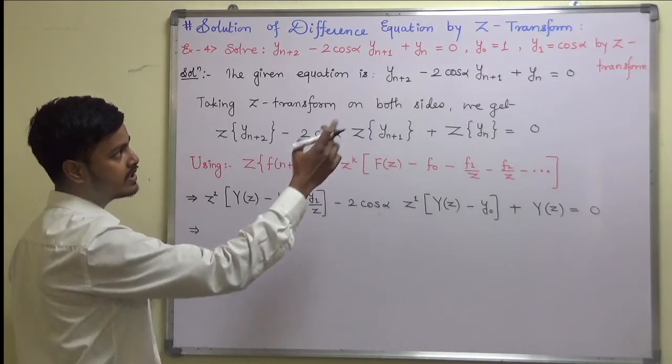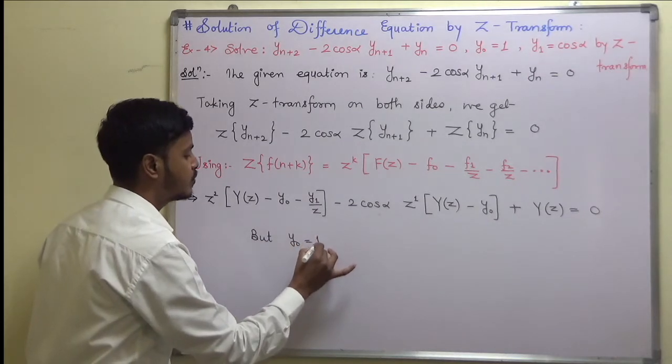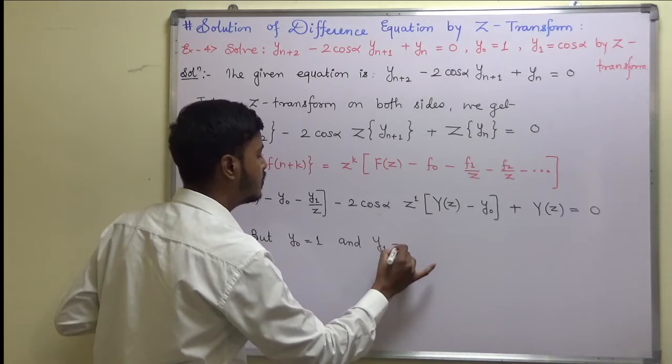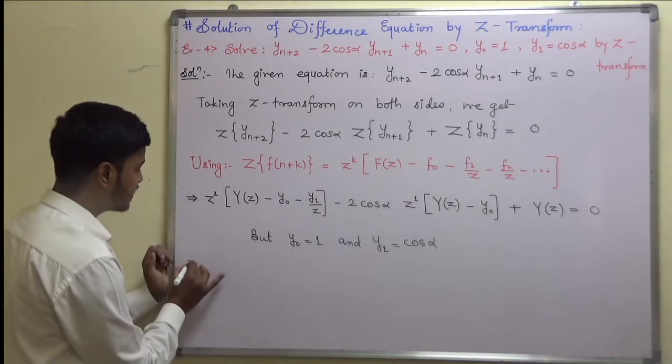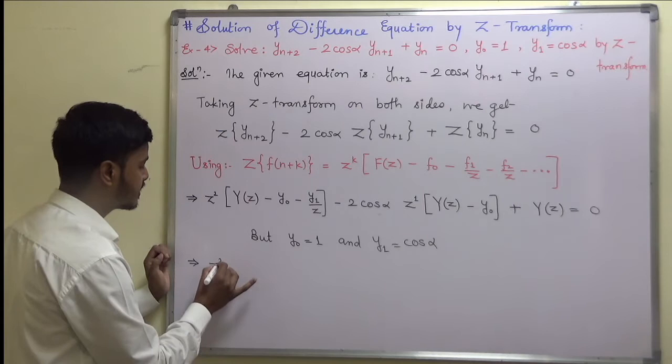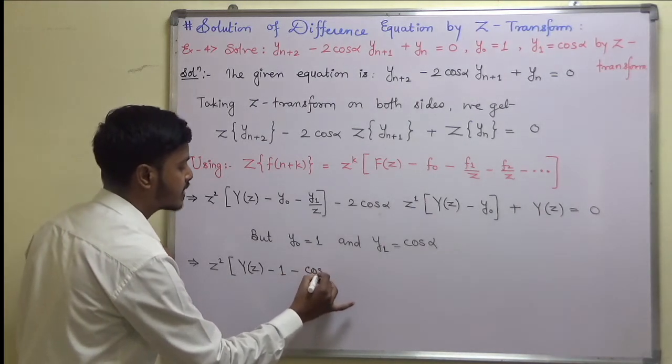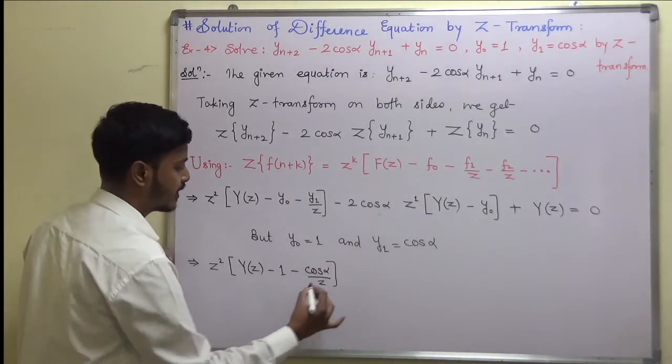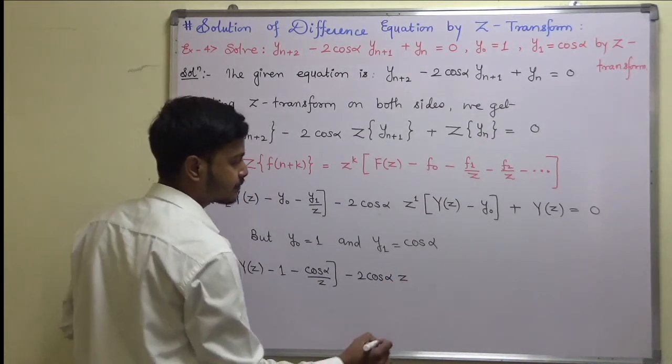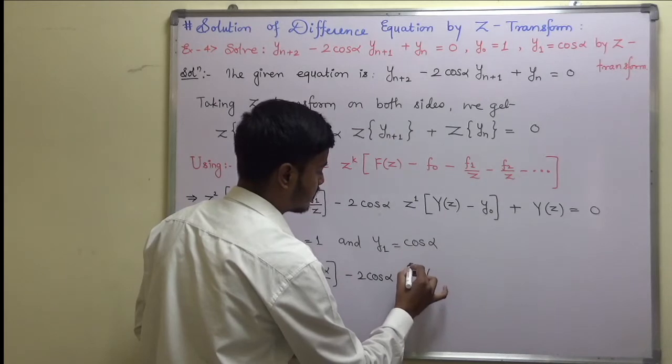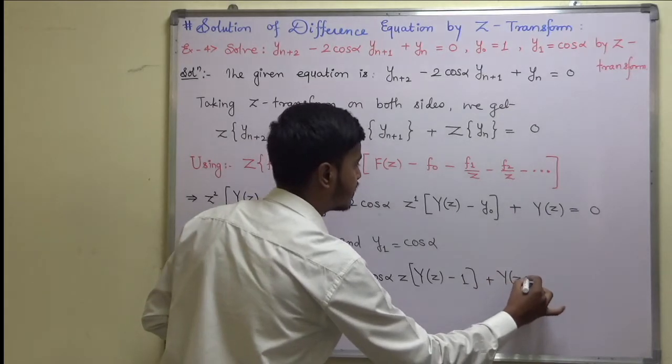The value of y(0) is 1 and y(1) is equal to cos(alpha). So this implies z^2[y(z) - 1 - cos(alpha)/z] minus 2cos(alpha)z[y(z) - 1] plus y(z) = 0. Very simple.